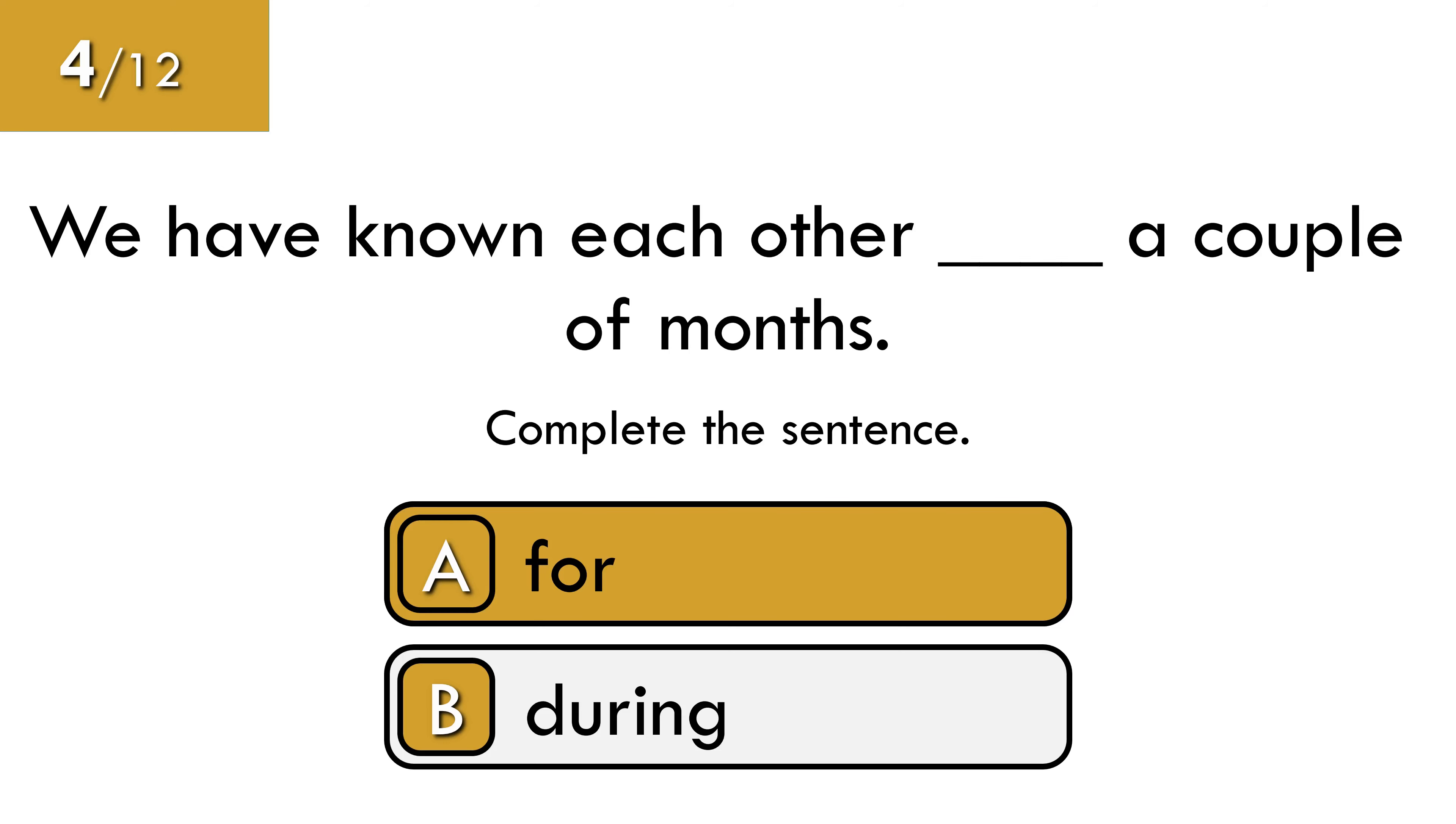When we refer to numbers and lengths of time, we use for, not during. For always answers the question, how long? And during is used before nouns and noun phrases.